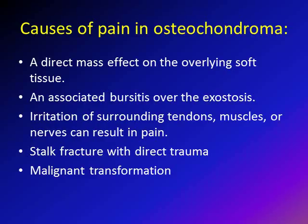Osteochondroma by itself is usually not painful; however, it can present with pain. The causes include: direct mass effect compressing overlying soft tissue; bursitis over the osteochondroma; irritation of surrounding tendons, muscles, or nerves — for example, osteochondroma of the medial distal femur irritating the hamstring muscles; a stalk fracture due to trauma; and malignant transformation into chondrosarcoma.